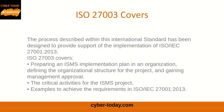The process described within this international standard has been designed to provide support for the implementation of ISO 27001. ISO 27003 covers the following: preparing an ISMS implementation plan in an organization, defining the organizational structure for the project and gaining management approval, the critical activities for the ISMS project, and examples to achieve the requirements in ISO 27001.